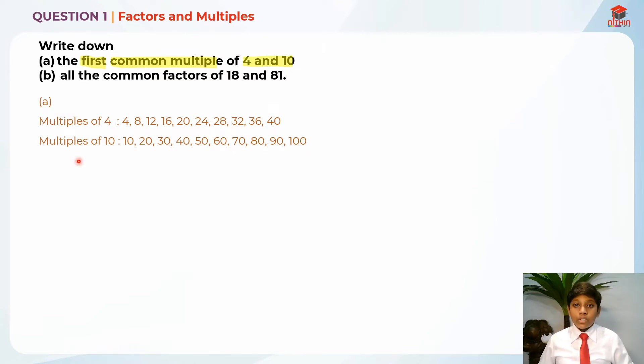So the first common multiple is basically the first number between both of these that we see is the same. So let's take a look. So that is 4, 4 and 10, 8 and 20, 12 and 30, 16, 40, 20.